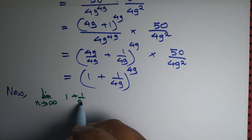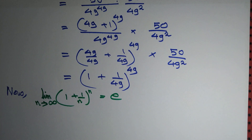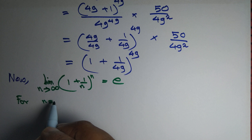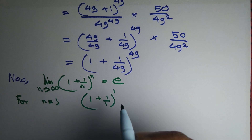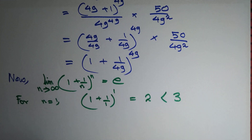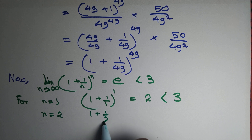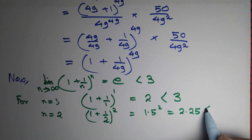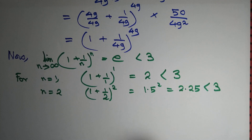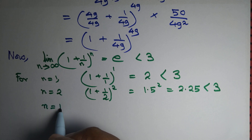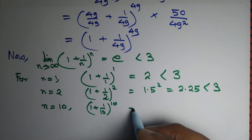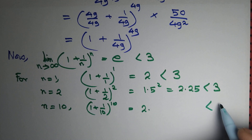Now, (1 + 1/n)^n equals e. If you know this, well and good; if not, we can verify. For n=1: (1+1)^1 = 2, which is less than 3, and we know e < 3. For n=2: (1+1/2)^2 = 1.5² = 2.25, again less than 3. And for n=10: (1+1/10)^10 equals something around 2-point-something, again less than 3.